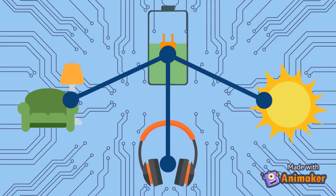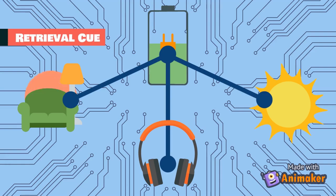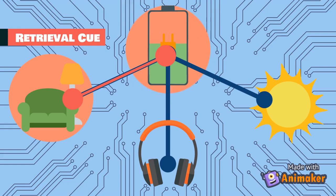All these cues are connected in memory almost like a web of information. Any one of them can serve as a retrieval cue. When one cue in the web is activated, it's easier to create a pathway to the information you're trying to remember.